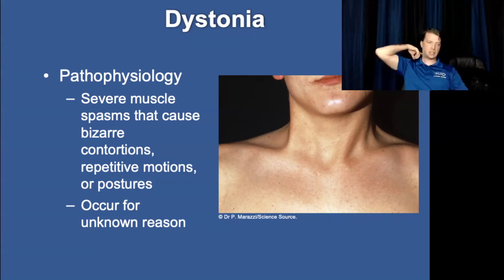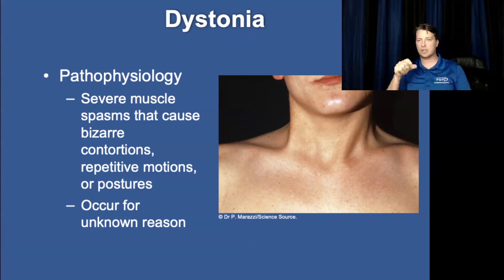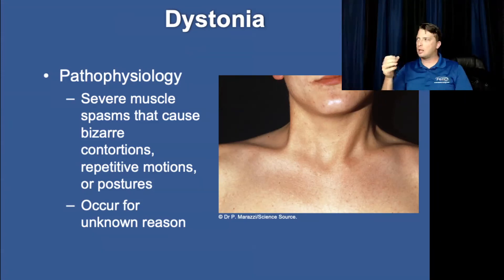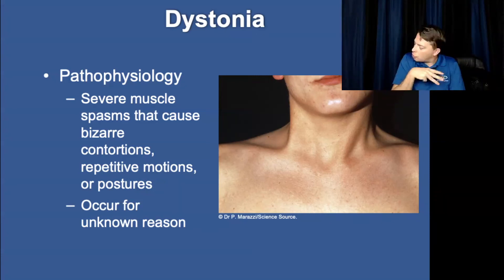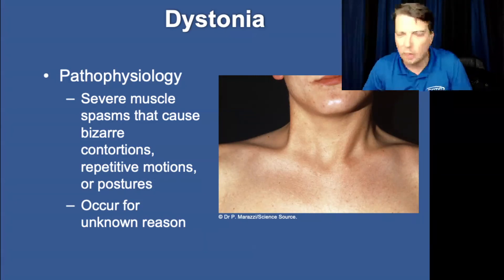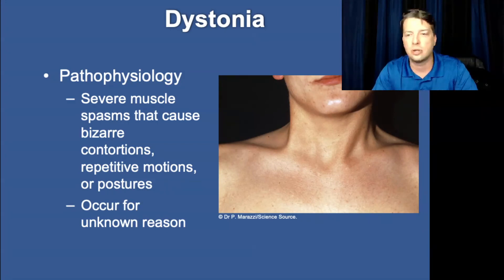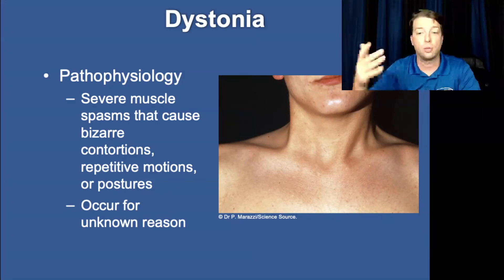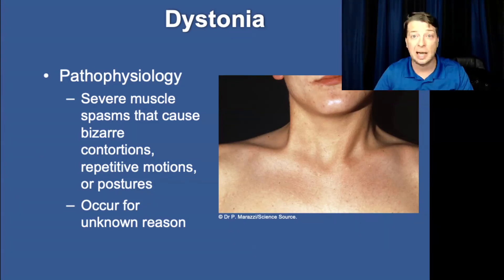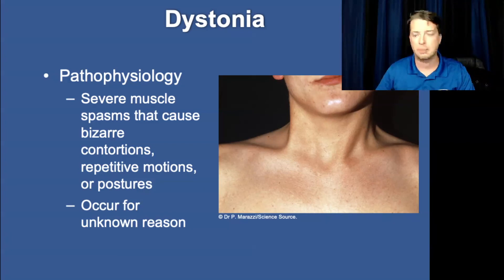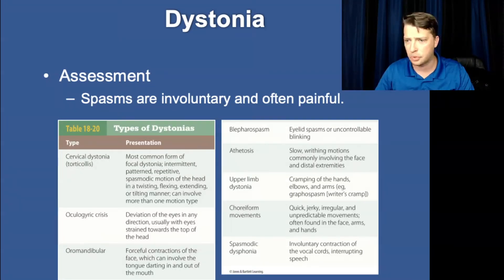Dystonia is a nervous condition where you have cramping or contraction of nerves, causing strange spasming or twitching — the patient contracts into contorted positions involuntarily. You might see this with patients who have cerebral palsy. Dystonic reactions can also result from reactions to certain medications, and the treatment is diphenhydramine — Benadryl.